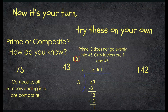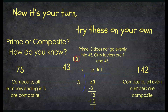Your last challenge: the number 142. Pause this video and see if you can determine if it's prime or composite — and could you explain how you know? 142 is composite. Remember, 142 is an even number, and we said all even numbers are composite except our rule breaker, the number 2. So: 75 is composite, 43 is prime, and 142 is composite.